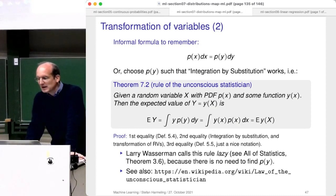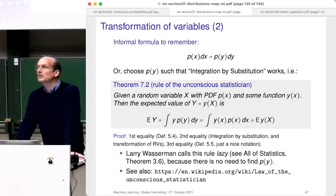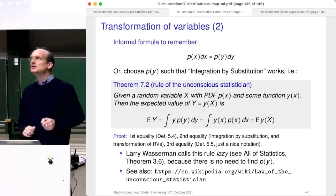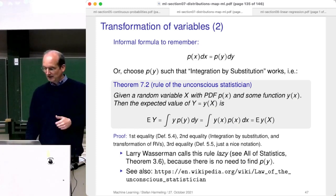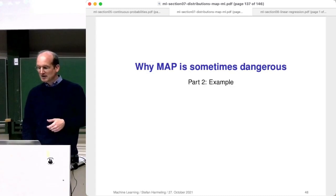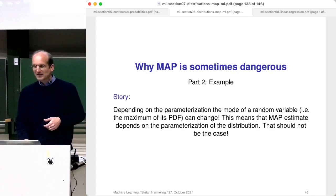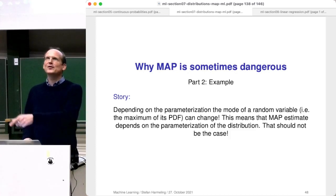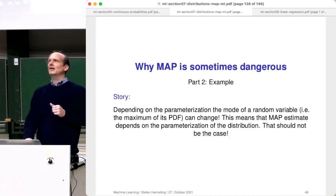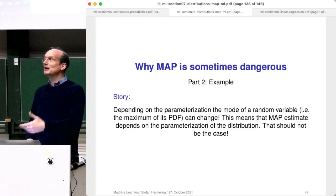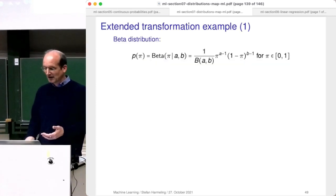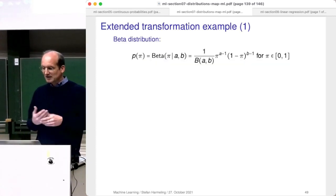That is closely related to the transformation of variables rule and shows the link between integration by substitution and this theorem. Now why is MAP dangerous? Here comes an example, and there is a missing hole in the derivation. If one of you can fill it, please send me an email — I will include it in the slides immediately.